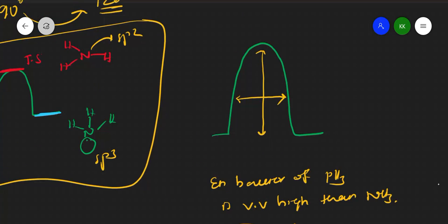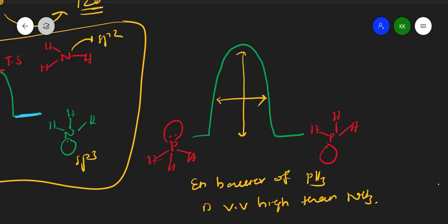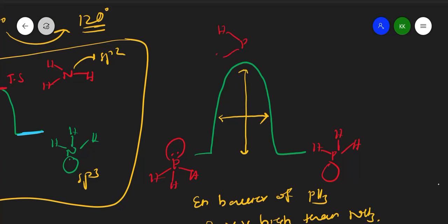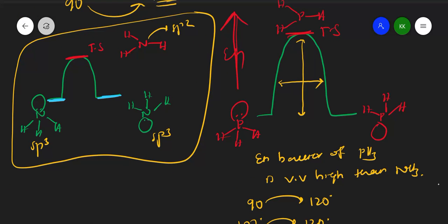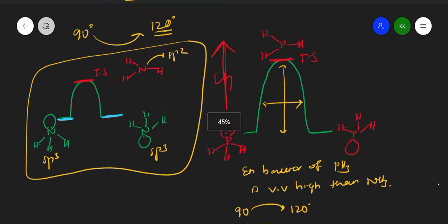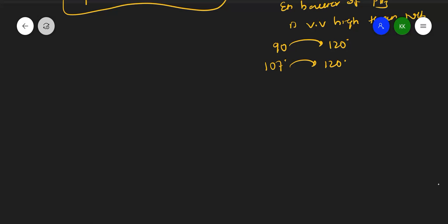The energy diagram for ammonia shows a relatively low and narrow barrier, with NH3 going from SP3 through a planar SP2 transition state back to inverted SP3. For phosphorus, the energy diagram shows both a greater height and greater width of the barrier, confirming the energy barrier for PH3 pyramidal inversion is much higher than for NH3. The x-axis is reaction coordinate and y-axis is energy.